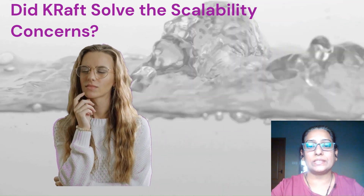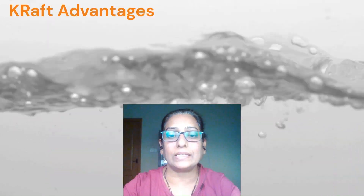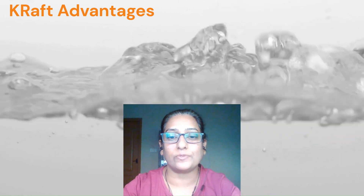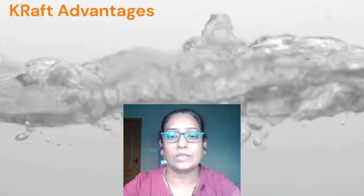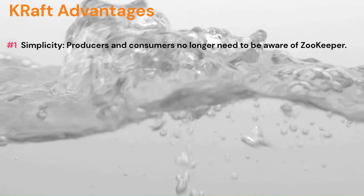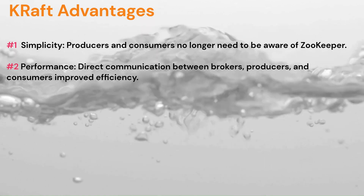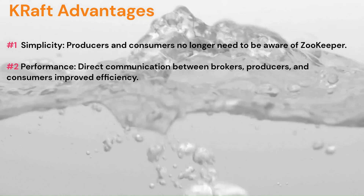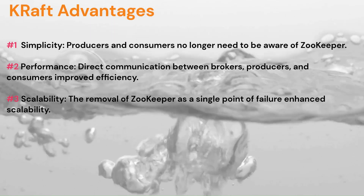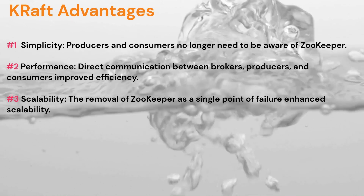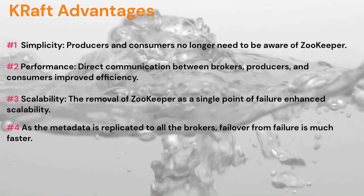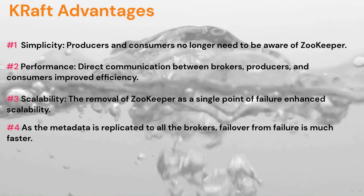Replacing ZooKeeper with Kafka Raft Metadata was a huge change, so let's understand how Kafka has benefited. First, simplicity — producers and consumers no longer need to be aware of ZooKeeper. Second, performance — direct communication between brokers, producers, and consumers improved performance and efficiency. Third, scalability — the removal of ZooKeeper as a single point of failure enhanced scalability. Fourth, as metadata is replicated to all brokers, failover from failure is much faster.